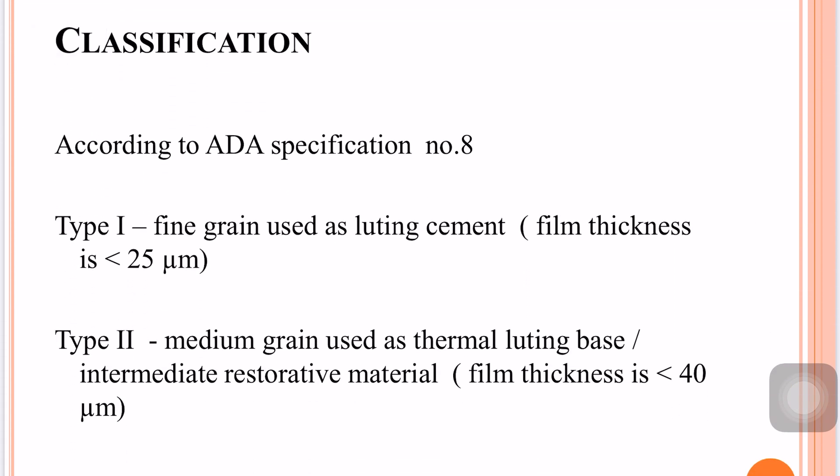Zinc phosphate cement is classified according to ADA Specification Number 8. Type 1 is a fine grain powder used as a luting agent, whereas Type 2 is a medium grain powder mainly used as a thermal insulating base and intermediate restorative material.